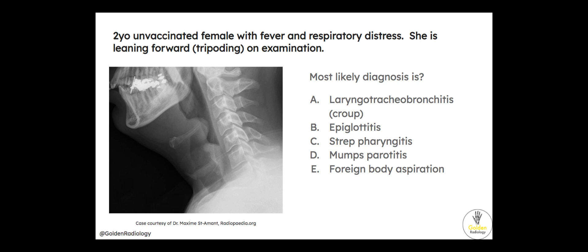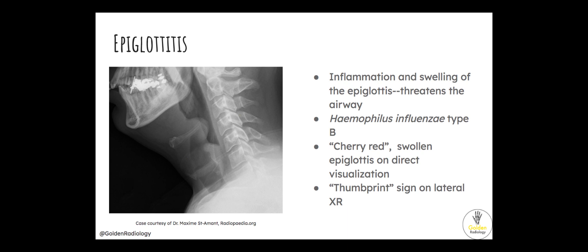Two-year-old unvaccinated female with fever and respiratory distress. She is leaning forward, tripoding, on examination — most likely diagnosis? Croup, epiglottitis, strep pharyngitis, mumps, peritonitis, or foreign body aspiration? This was epiglottitis — inflammation and swelling of the epiglottis, which can threaten the airway. It's caused by Haemophilus influenzae type B, and you'll classically see a cherry red or swollen epiglottis on direct visualization.